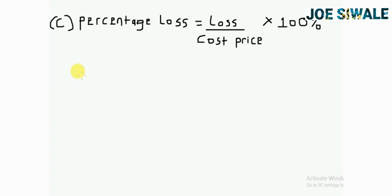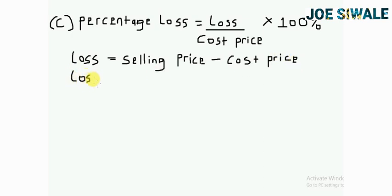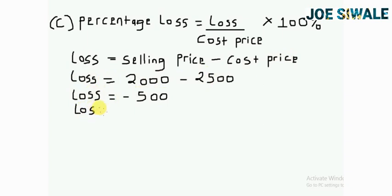To calculate the percentage loss, I know that the formula of percentage loss equals loss divided by cost price multiplied by 100%. Since I know the value of cost price, this means I need to calculate the value of loss. Loss equals the selling price minus the cost price. So loss equals the selling price, that's 2000 kwacha, minus the cost price, that's 2500 kwacha. So 2000 minus 2500, that's negative 500. This means the loss that was made was 500 kwacha.